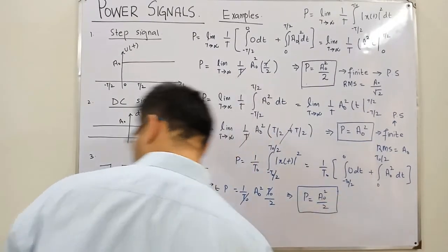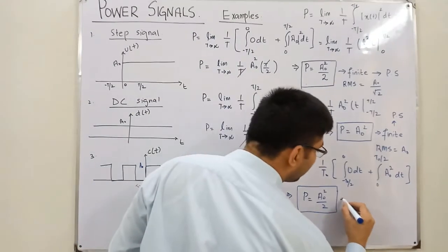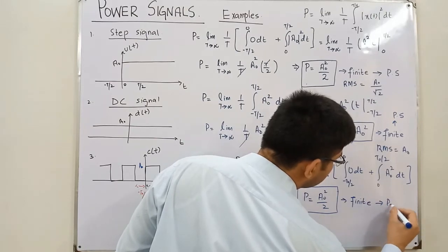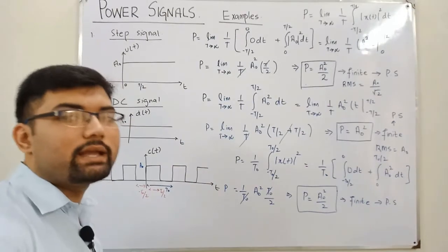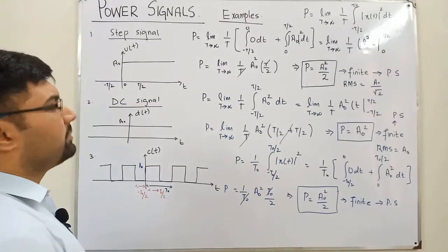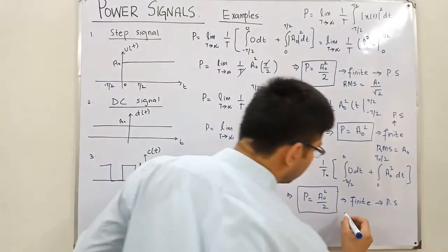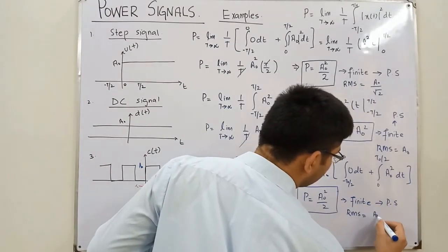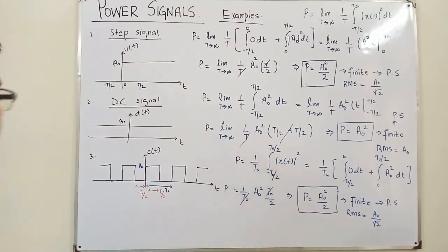So the power equals (1/T₀) × a₀² × T₀/2 = a₀²/2. This is a finite power, which means the clock pulse is a power signal, and for a power signal the energy is infinite. The RMS value is a₀ divided by root 2. This is similar to the step signal result.